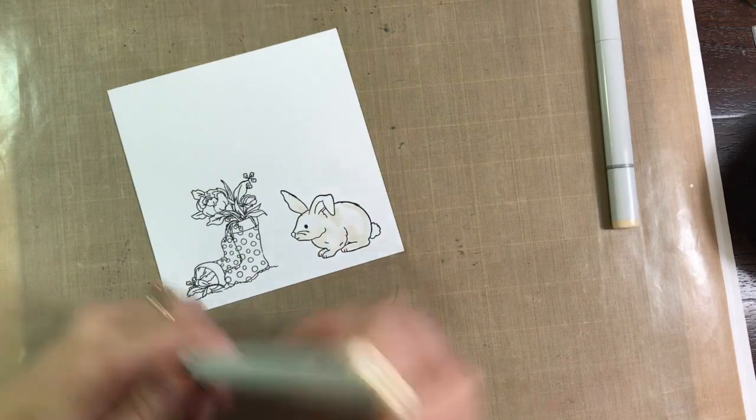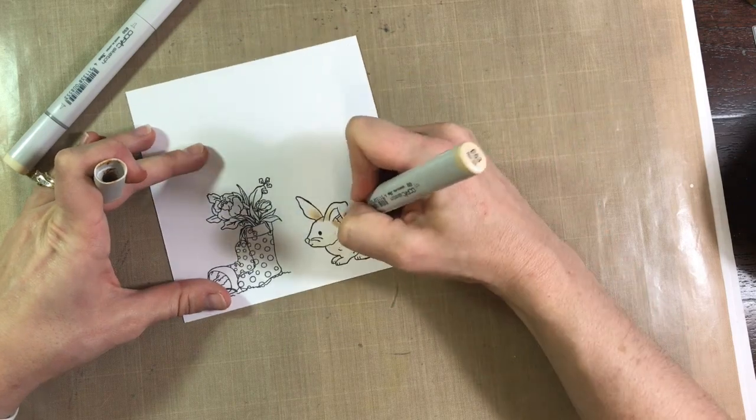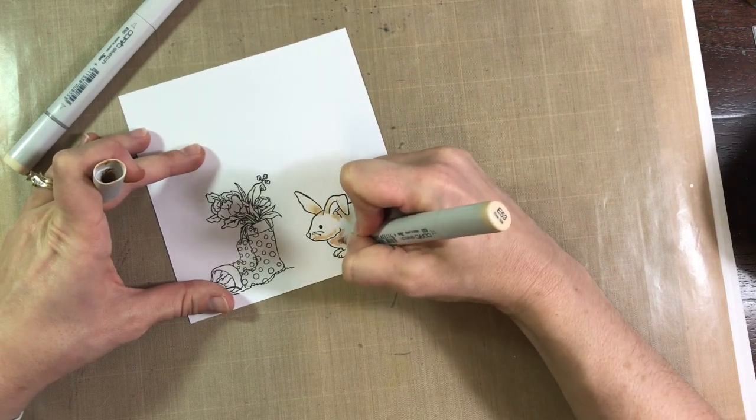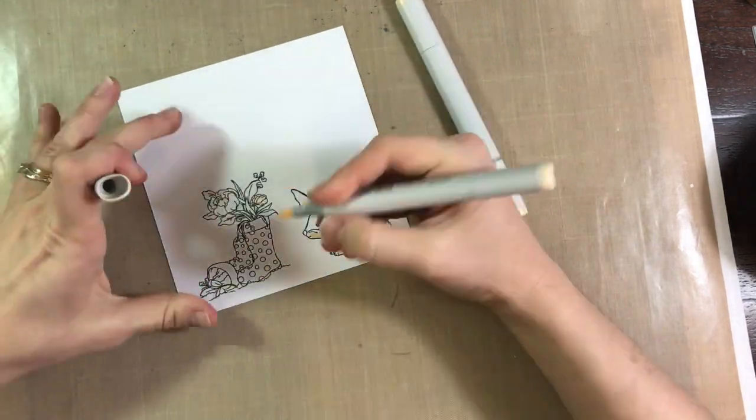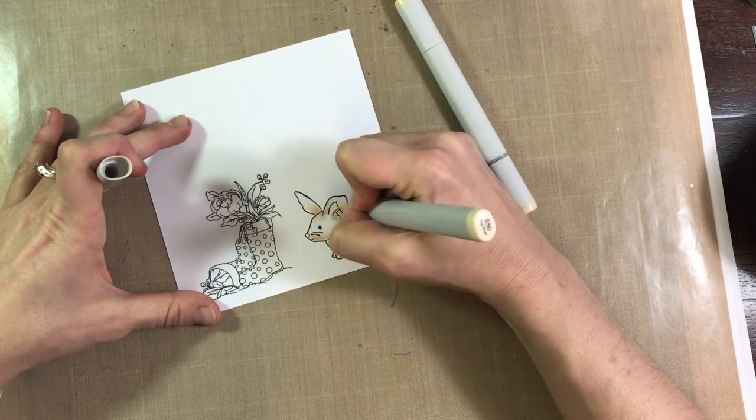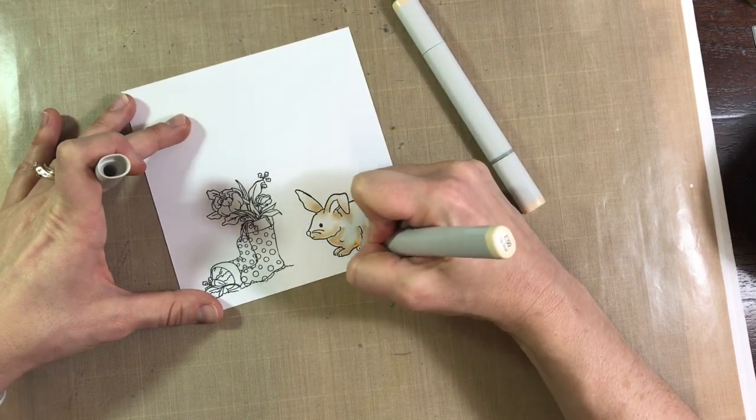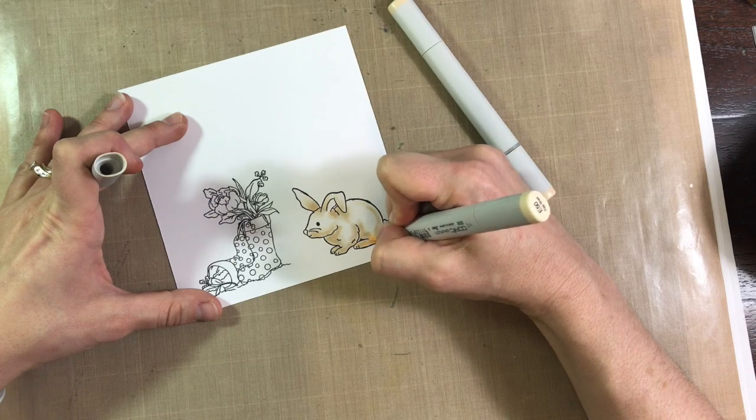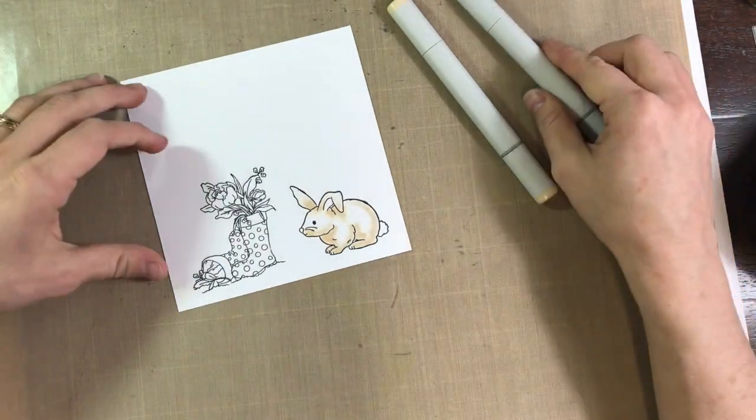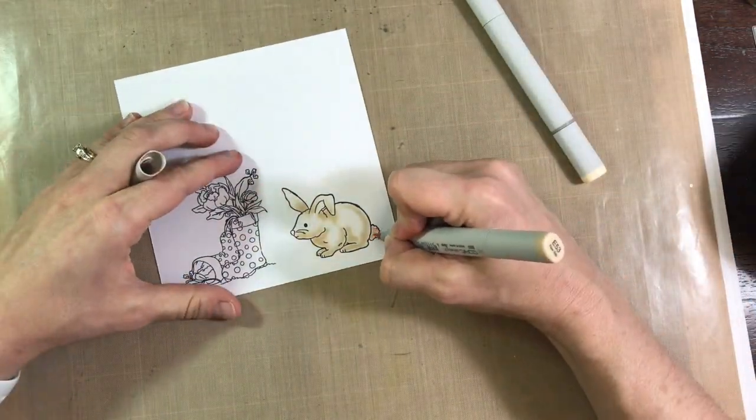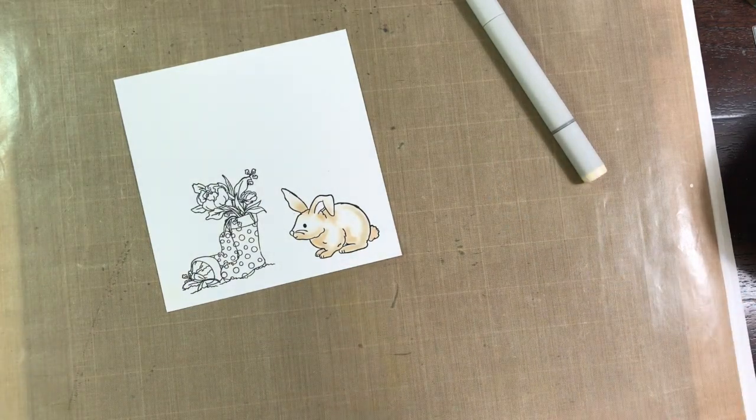And the Copics that I grabbed are E50 and E53 to color the bunny. And nothing special, just wherever I think that the shadows might land, that's where I'm putting down my color. Just going back in and blending it out. The bunny is so cute. And the Memento Tuxedo Black ink that I used is a Copic friendly ink. It dries rather quickly. So it's perfect for Copic blending.